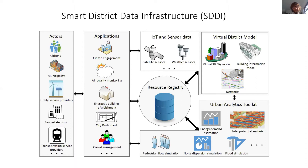Key to this is a 3D city model — a virtual district model shown in the top right — based on a real district, using a 3D visualization with semantic data to represent not just the shapes but also what those shapes mean. We can annotate and tag these shapes with additional information about what the objects represent, and develop a suite of tools that can simulate people's flows or look at potential energy efficiency improvements.